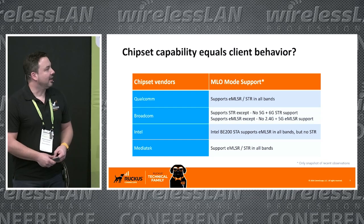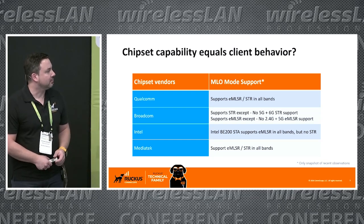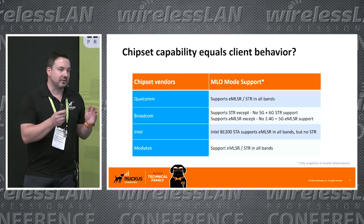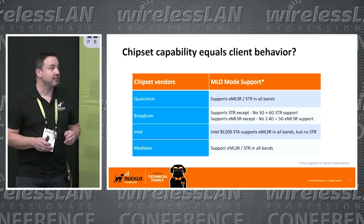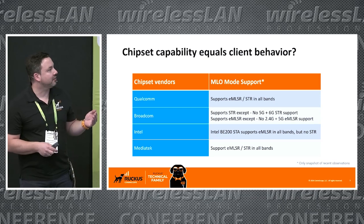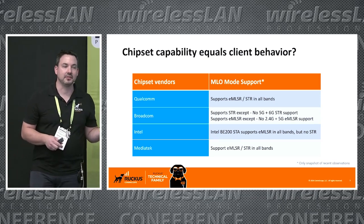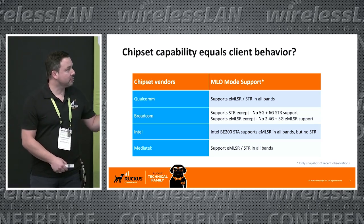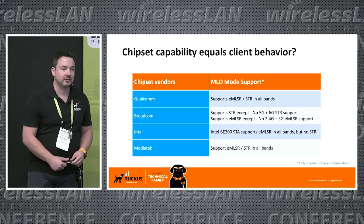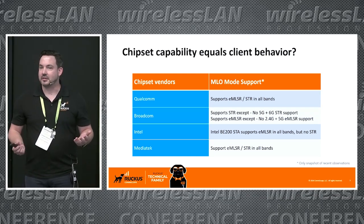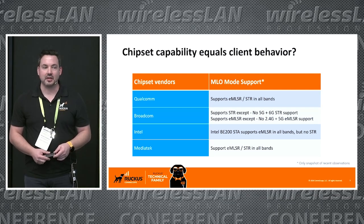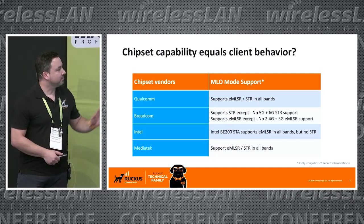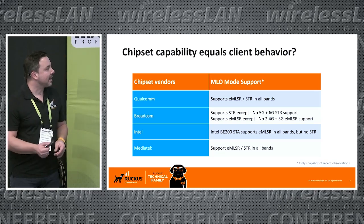For now this is a common view as we see it. The importance here is that not all stations behave the same, and most interestingly, not all stations using the same chipset vendors behave the same. For example, one device using Qualcomm should do all the bands — EMLSR and SDR — but we find out it's not going to use 5 and 6 GHz for MLO at the same time; it's only doing 5 and 6, or 2.4 and 6.